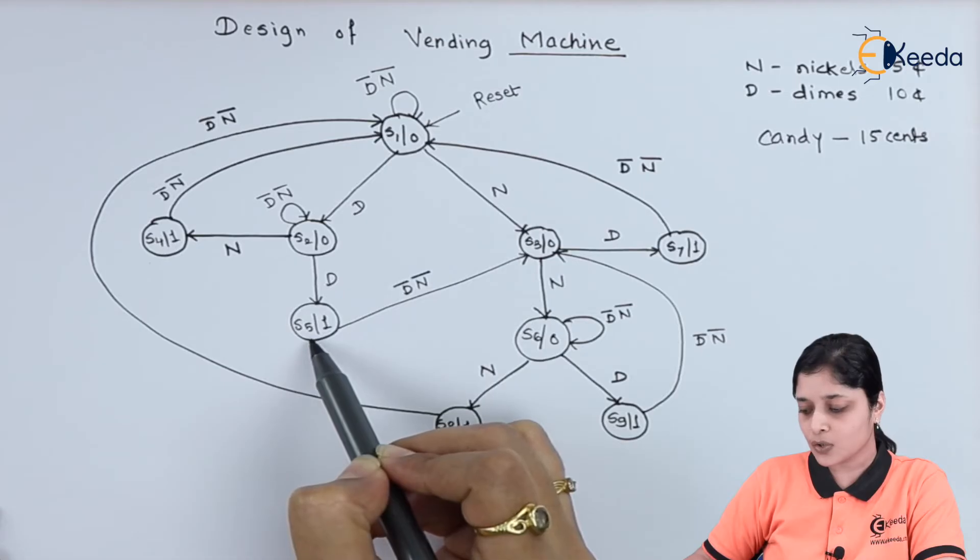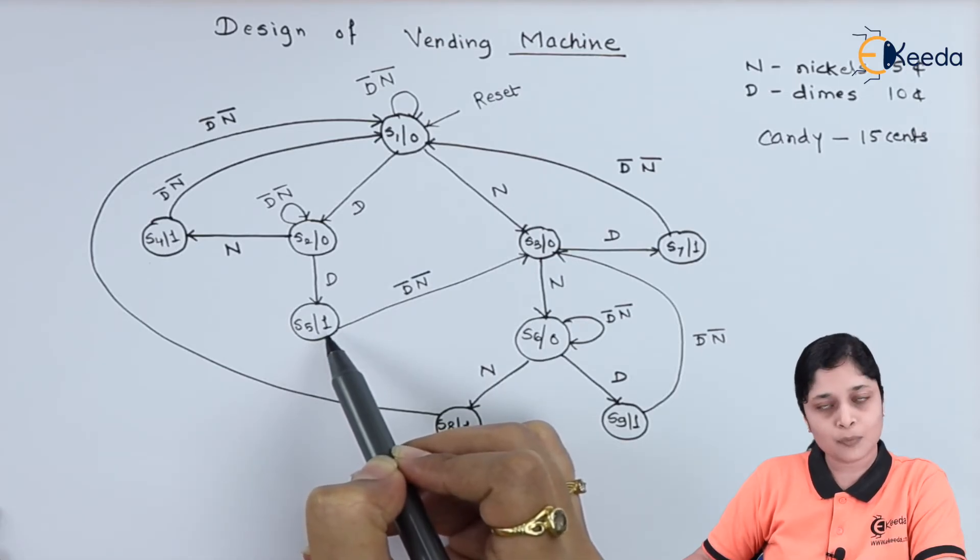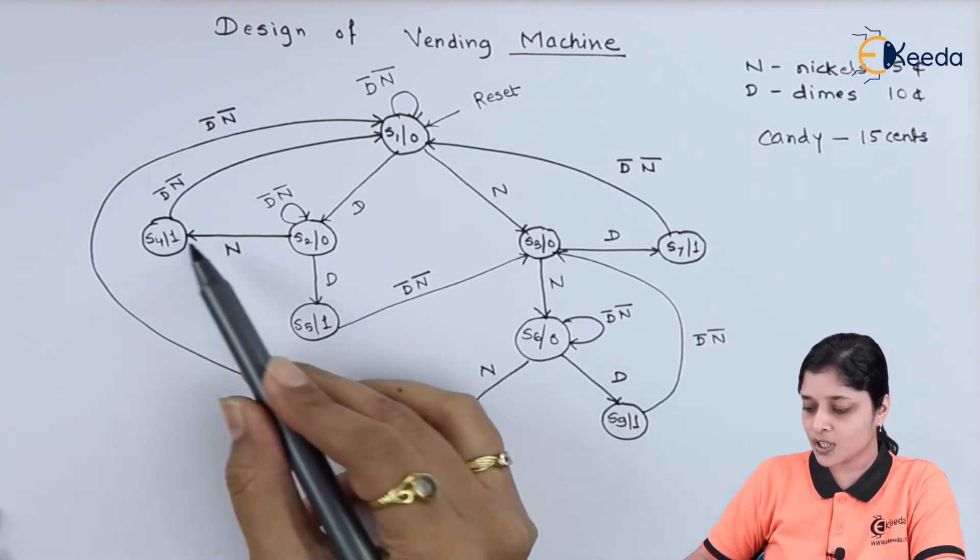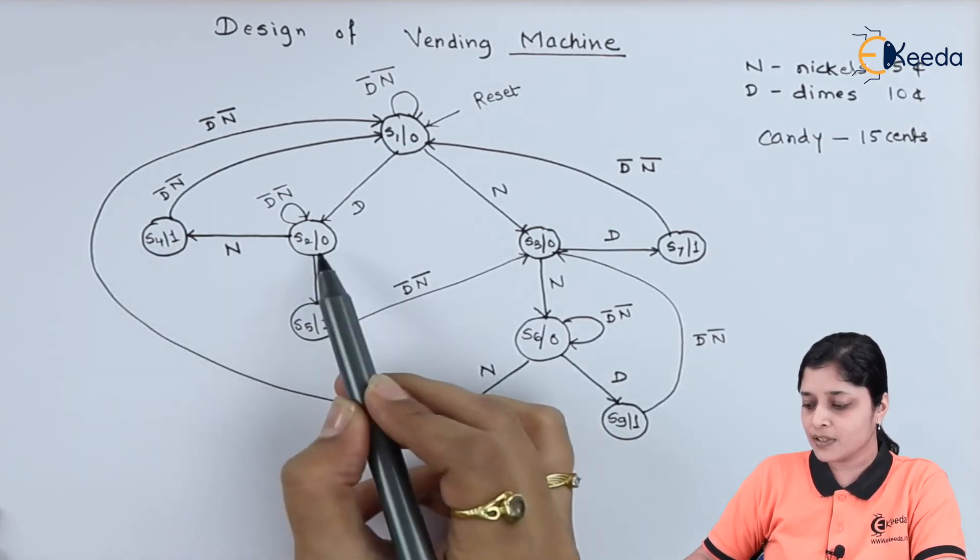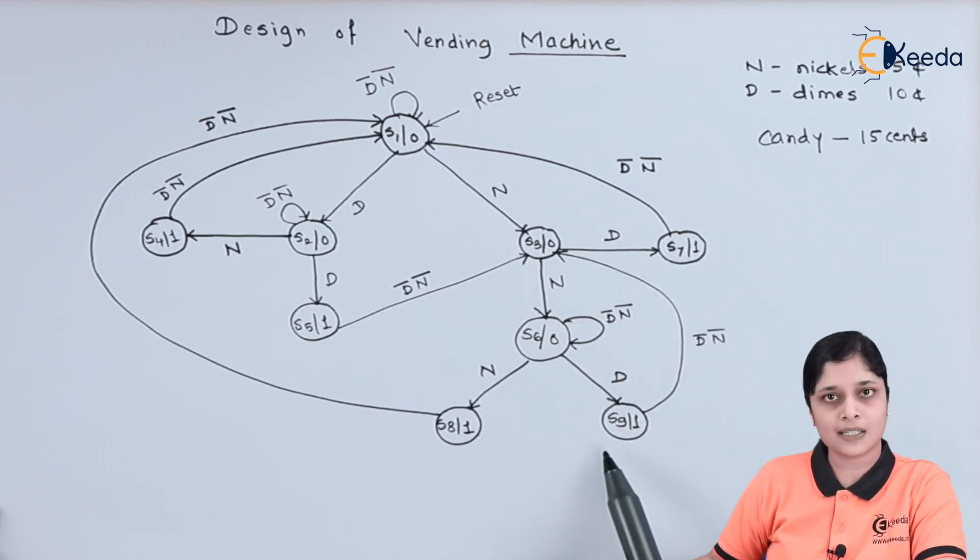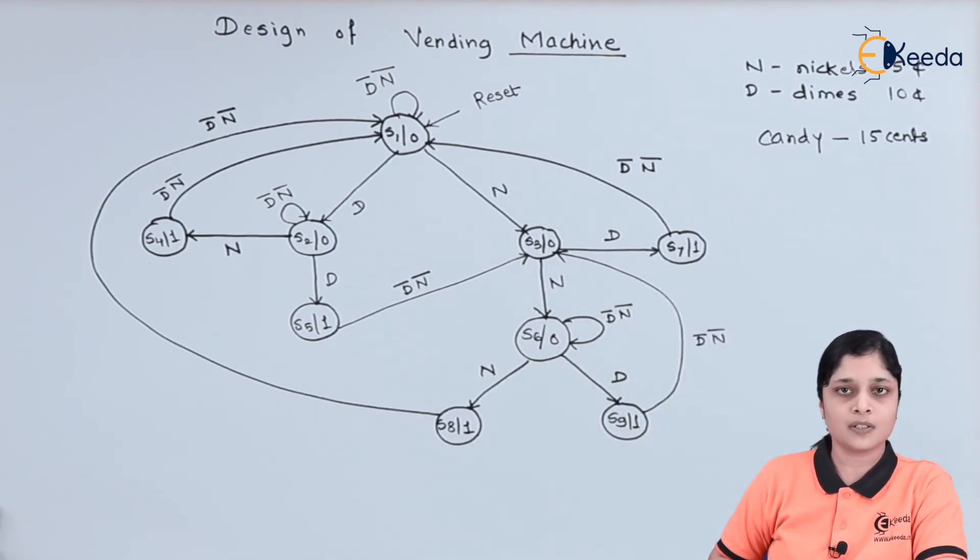And in state S5 also, customer has deposited sufficient money to get the candy. That's why here outputs are 1. And if these two conditions are not there, then according to this state diagram, it will give the respective message.